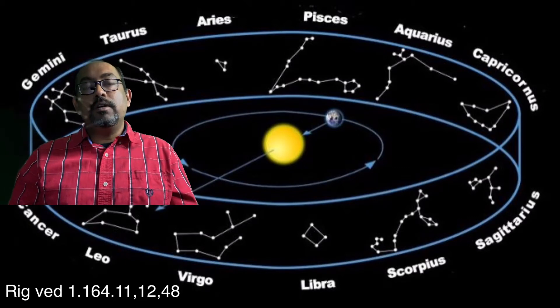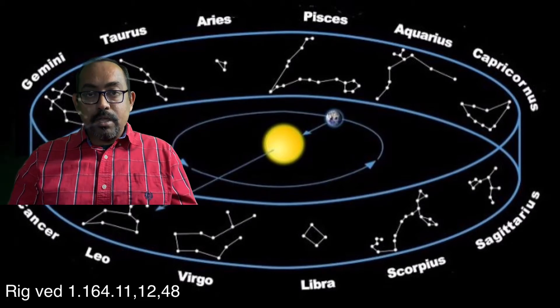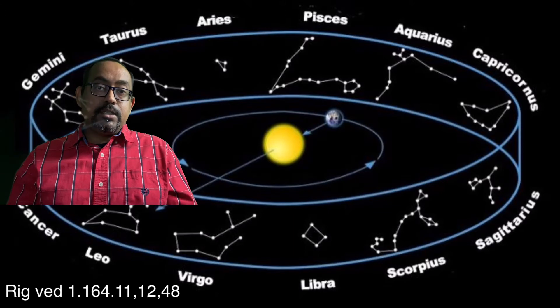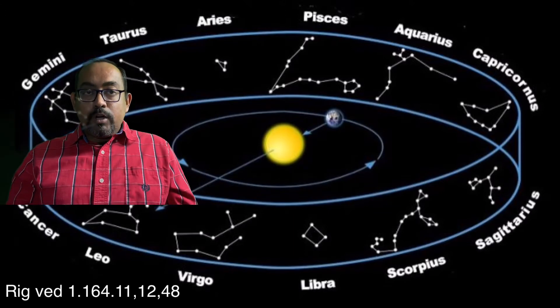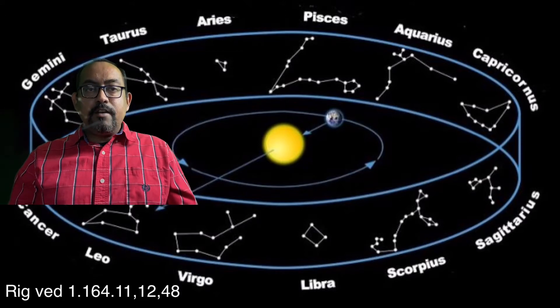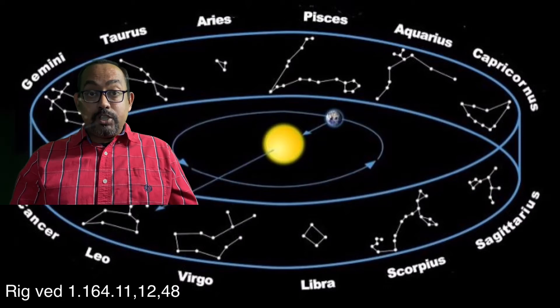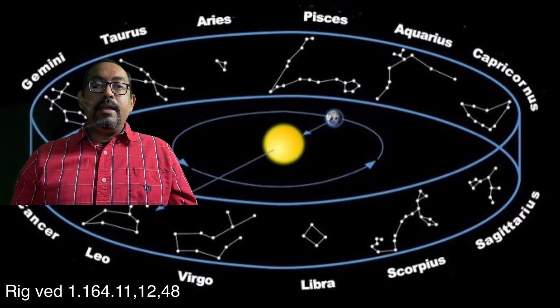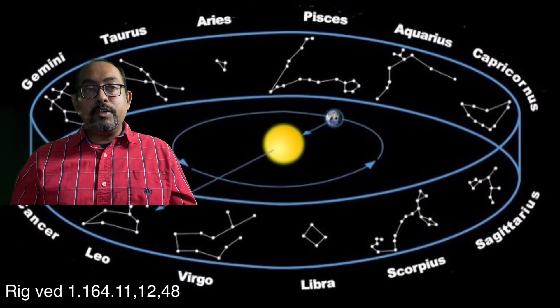In this mantra we are talking about kaal. As I mentioned in mantra 1.164.12 there are six seasons in Hindu calendars. What are those six? One is vasant ritu which is spring, then grishma ritu which is summer, then varsha ritu which is monsoon, then sharad ritu which is autumn, then pre-winter which is hemant, and then shishir or shita ritu which is winter.